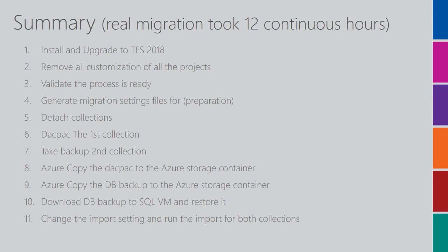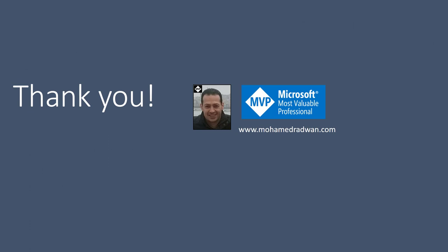To give a quick summary: the real migration took about 12 hours. We started at 4 PM after working hours and finished at 4 AM on a Friday to minimize downtime. The steps were: install TFS 2018, remove all project customizations, validate, generate the migration settings file, detach collections, create the dacpac for the first collection, take a backup for the second collection, upload both to Azure using AzCopy, restore the database on the SQL Server VM, update import settings, and run the production import.